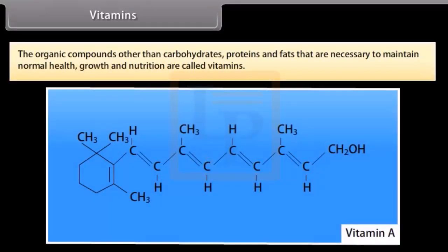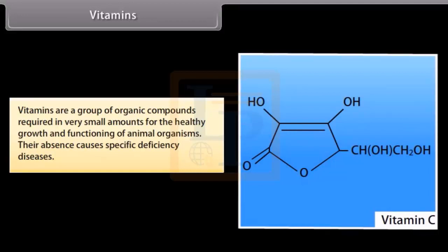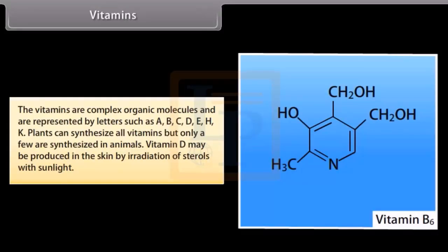The organic compounds — other than carbohydrates, proteins, and fats — that are necessary to maintain normal health, growth, and nutrition are called vitamins. Vitamins are a group of organic compounds required in very small amounts for the healthy growth and functioning of animal organisms. Their absence causes specific deficiency diseases. The vitamins are complex organic molecules represented by letters such as A, B, C, D, E, H, and K. Plants can synthesize all vitamins, but only a few are synthesized in animals. Vitamin D may be produced in the skin by irradiation of sterols with sunlight.